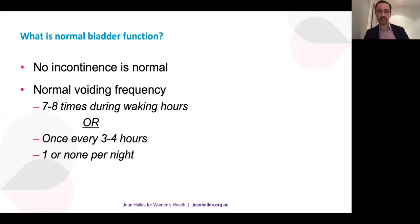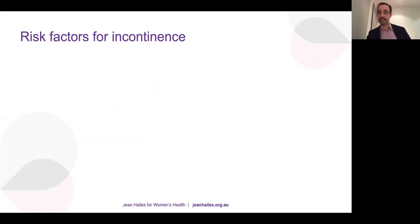Normal voiding is about seven to eight times during waking hours — roughly every three to four hours. Waking once at night can be considered a normal variant; nocturia is defined as waking two or more times to void.